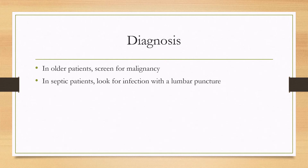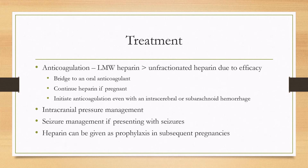In older patients, you can also screen for malignancy as a cause of the thrombosis, and in septic patients you'll want to look for an infection with a lumbar puncture. In terms of treatment, the initial treatment is anticoagulation. Low molecular weight heparin is preferred over unfractionated heparin due to slightly better efficacy, although either can be used. You'll then bridge to an oral anticoagulant, and if the patient is pregnant, heparin is continued as oral anticoagulants are usually contraindicated in pregnancy. One important concept commonly tested is that anticoagulation is initiated even in the presence of intracerebral or subarachnoid hemorrhage, as it is safe to do so.